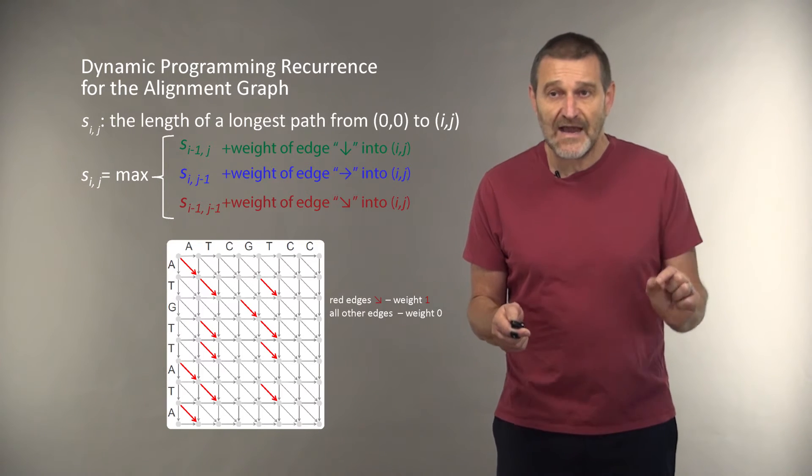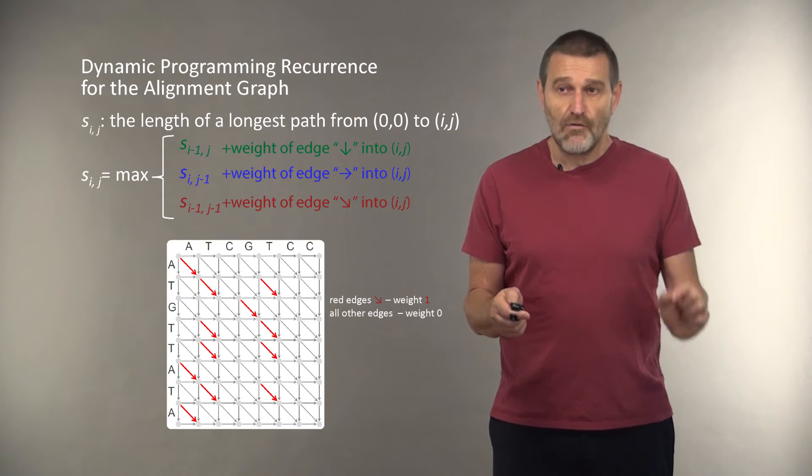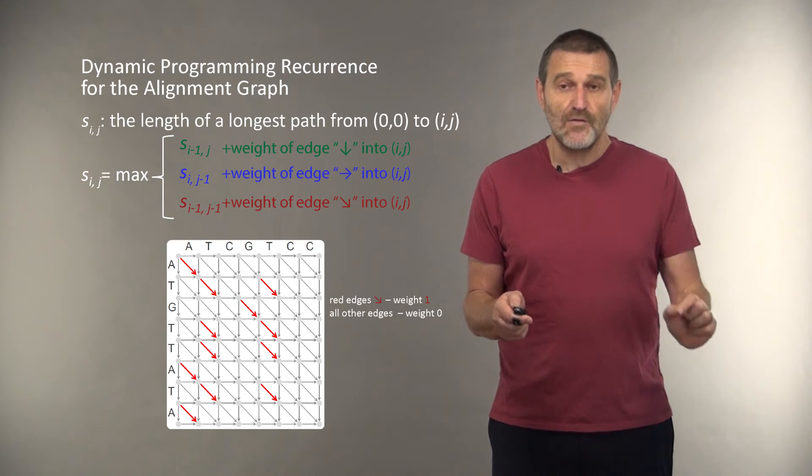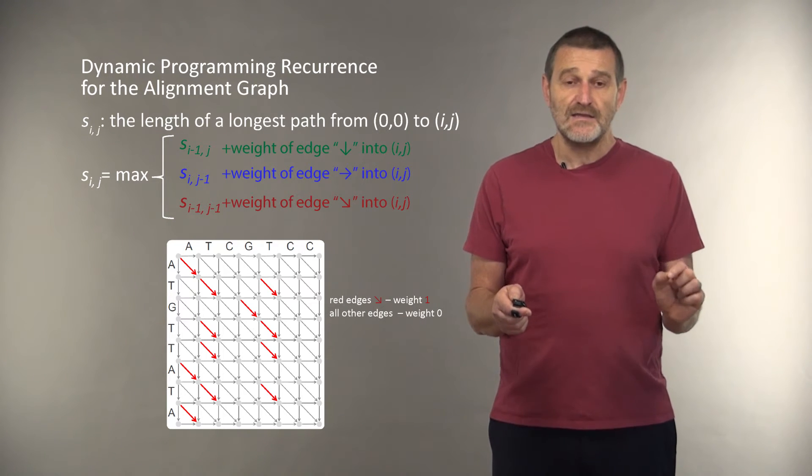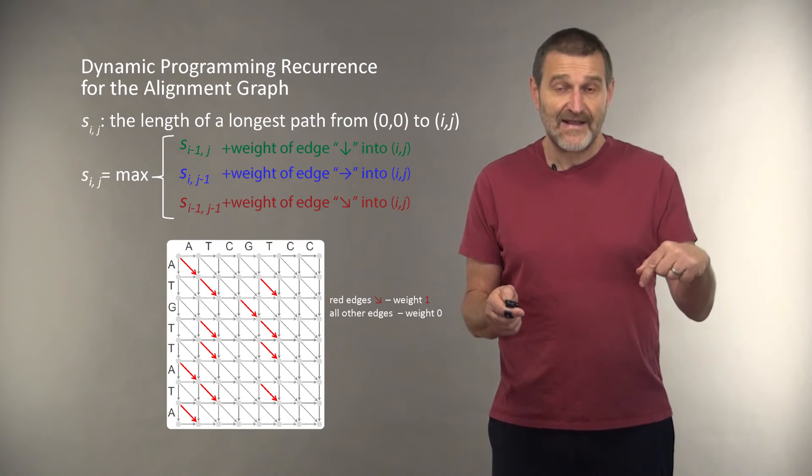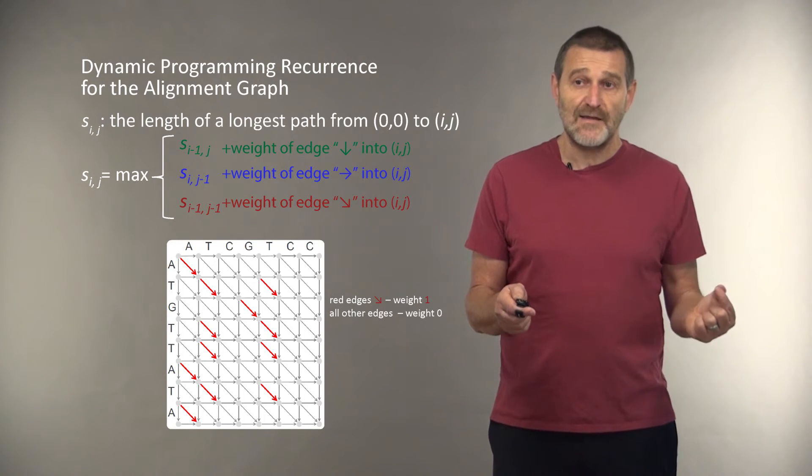If we define S_ij as the length of the longest path from (0,0) to (i,j), then in the alignment graph, where we have diagonal edges corresponding to the alignment gate, we have three choices.